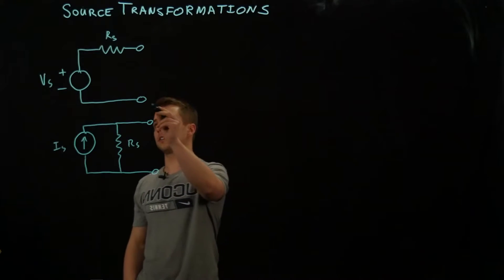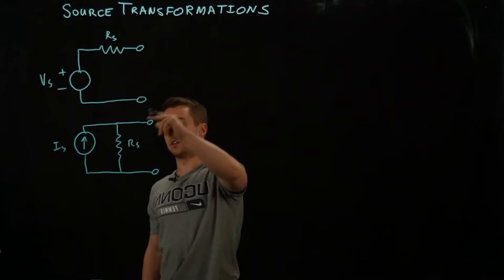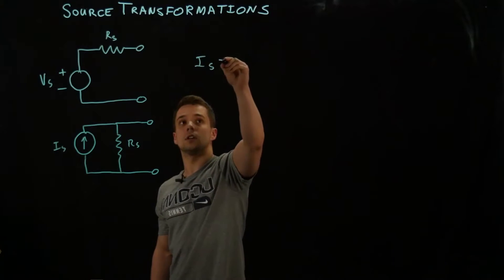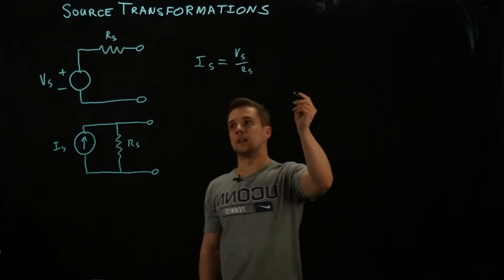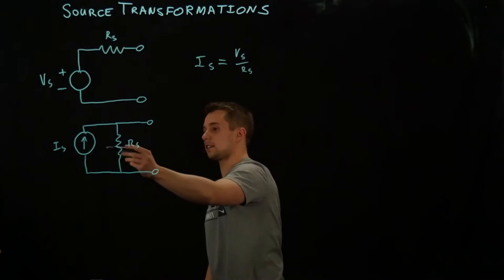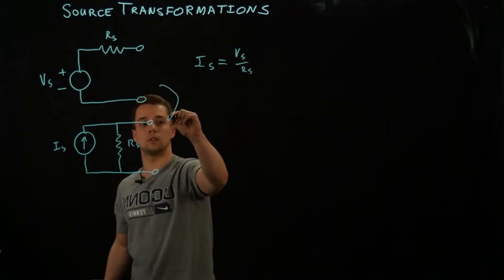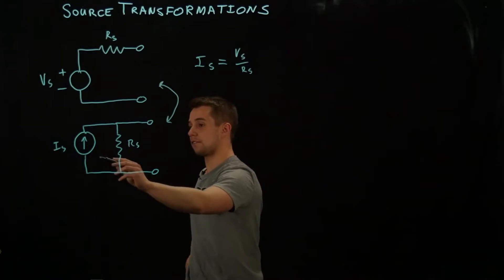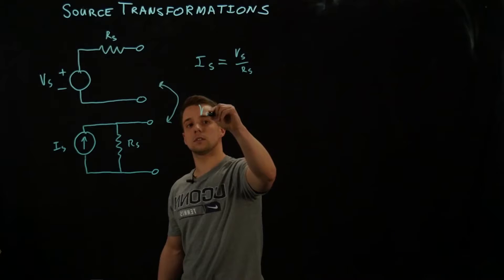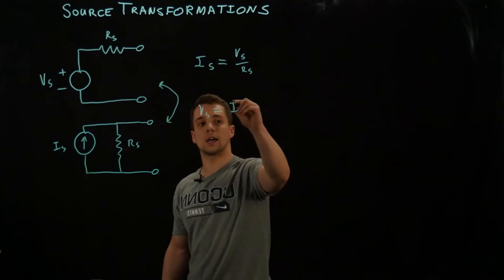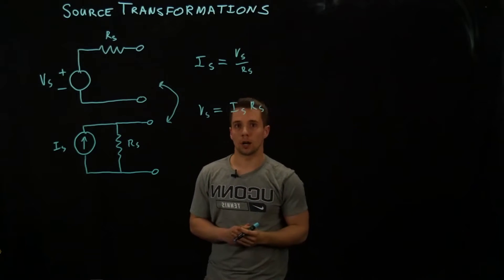So you start with the voltage source and the resistor in series. To get the current source equivalent, IS is equal to VS divided by RS, and the resistor stays the same. If you want to go back from the current source with a resistor in parallel to the voltage source with a resistor in series, VS is equal to IS times RS.